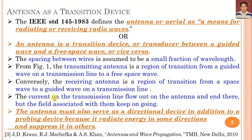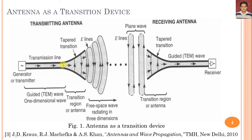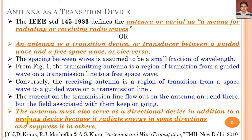The current on the transmission line flows out on the antenna and ends there, but the fields associated with them keep on going. The field is created by current — the magnetic field — and also the electric field is created by the flux, considering Coulomb's law. We can define another definition of the antenna: the antenna must also serve as a directional device in addition to a probing device, because it radiates energy in some directions and suppresses it in other directions.